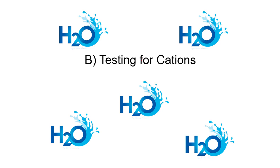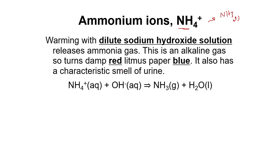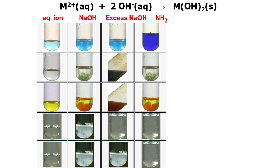In the chemical test, the first cation is ammonium, NH4+. Ammonium produces NH3 gas when tested, which turns damp red litmus paper blue. We add dilute sodium hydroxide (NaOH) solution to the ammonium solution. The ionic equation is: NH4+ + OH− → NH3 (gas) + H2O.